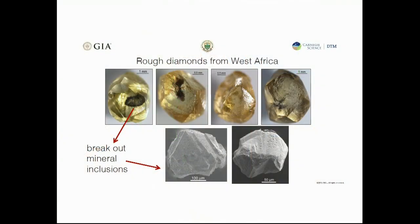The diamonds we studied are these beautiful yellow diamonds from West Africa. Unfortunately, we had to break them open and get their inclusions out in order to study them. I've shown some electron microscope images at the bottom of what these sulfide inclusions look like. We analyzed them for their rhenium-osmium and their sulfur isotopes.